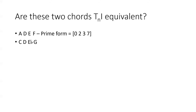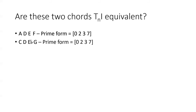In order to answer our original question, we also have to find the prime form of the second set to see if it matches. The pitch class integers of the second set's pitches: C is 0, D is 2, E-flat is 3, and G is 7. So I've already put this one in prime form. So are these two pitch class sets equivalent under transposition or inversion? Yes they are! This means that there is either a T or an I operation that describes how these are related.